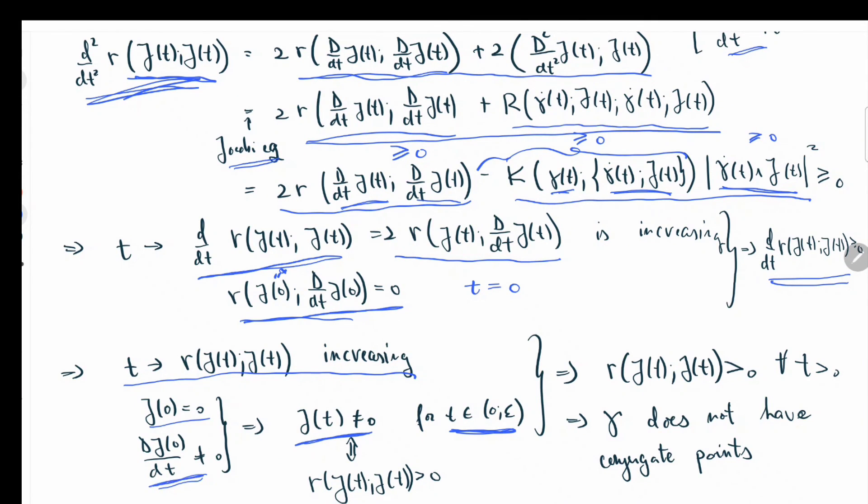This means this is equivalent to saying that the length of the Jacobian for small time parameter has to be positive. But the length function of the Jacobian is actually increasing. So that means that the Jacobian has positive length everywhere. In particular, if the Jacobian has positive length everywhere for every positive t, of course at t equals 0 it's 0, then gamma cannot have conjugate points, which is the desired conclusion.